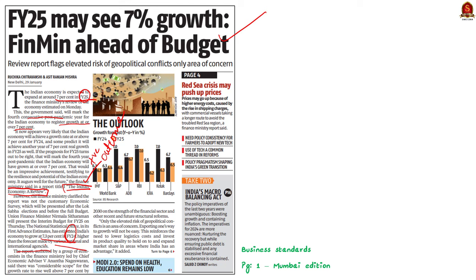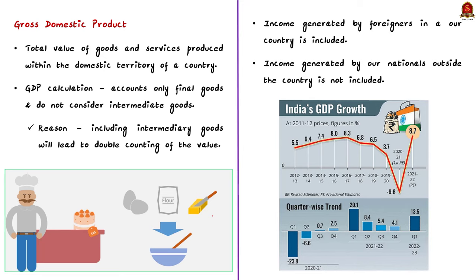In this context, let us understand GDP or gross domestic product from the exam perspective. GDP is the aggregate or total value of goods and services produced within the domestic territory of a country — in other words, the market value of all final goods and services produced within the boundary of a nation during one year. Let us understand each term: 'gross' signifies that no deduction has been made for the depreciation of machinery, buildings, and other capital products used in production — that is, it includes the total value.